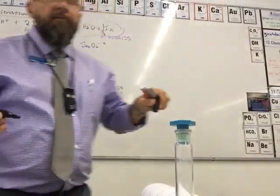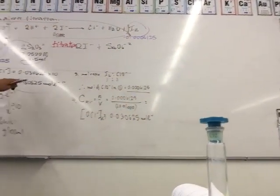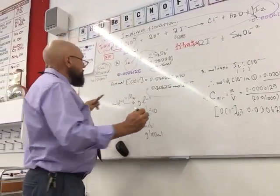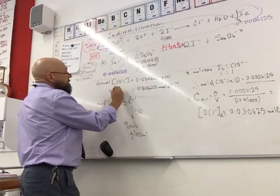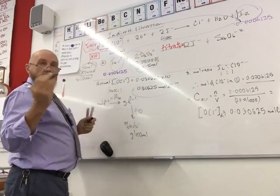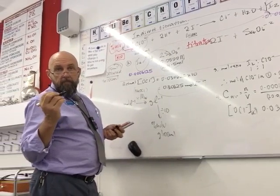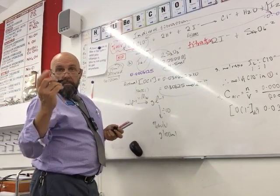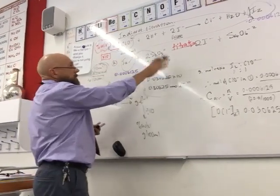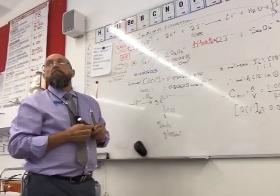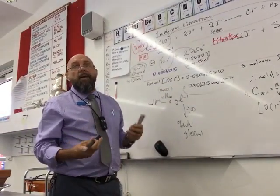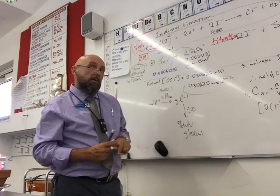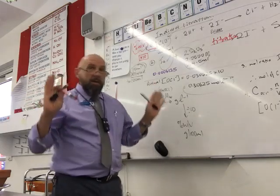The question asks for sodium hypochlorite, so we use NaOCl for the molecular weight calculation, not just OCl⁻. The sodium is a spectator ion — it doesn't participate in the reaction — but since bleach is reported as sodium hypochlorite, we use the full formula NaOCl.